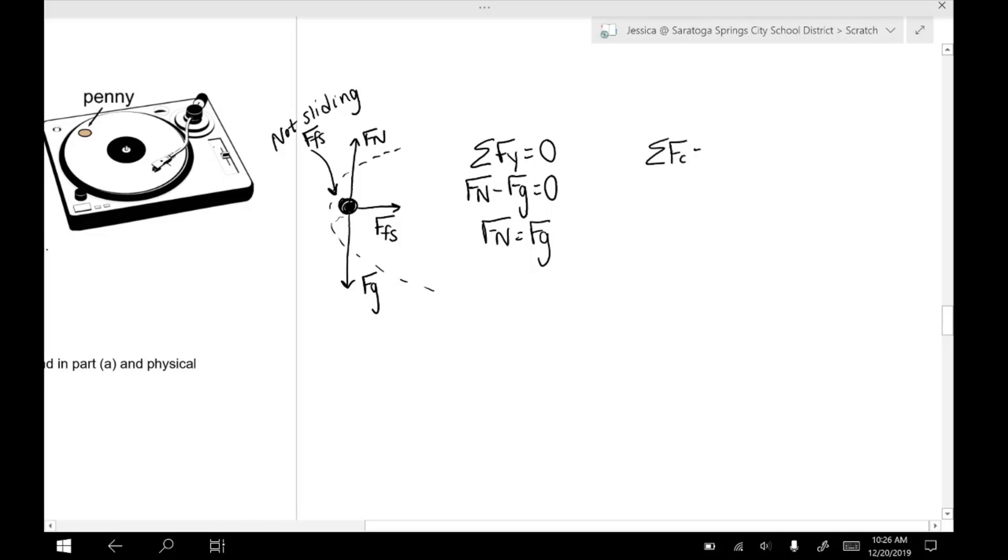Now, like I said, the centripetal force is caused by the static force of friction. Now this static force of friction, if you remember, is variable, up to some maximum. Okay. So as we change the centripetal acceleration, or really the velocity, okay, the amount of static friction applied to the penny is going to change up until we reach some maximum point when the penny actually breaks free of the surface and flies off.